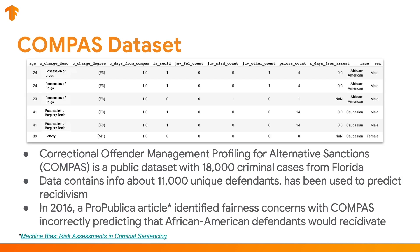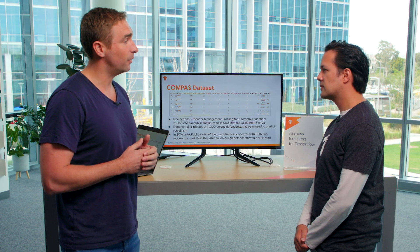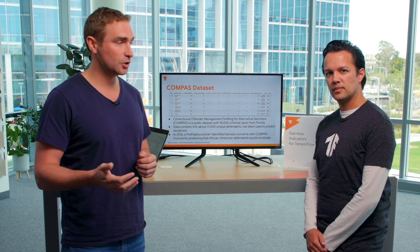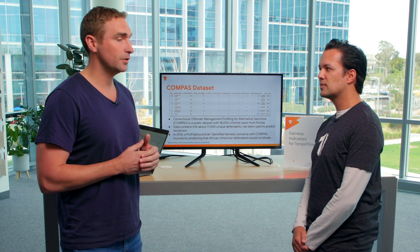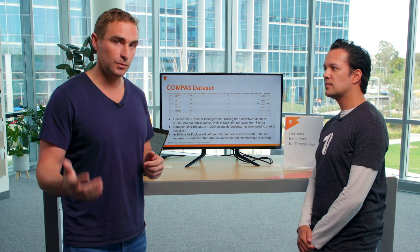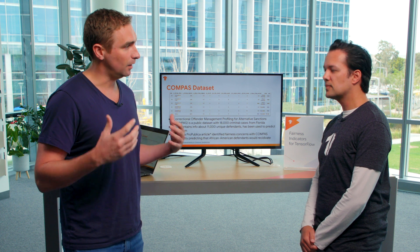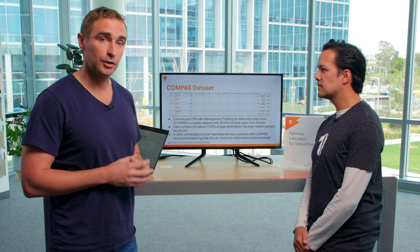The data we're using is known as the COMPAS dataset. This is two years of actual criminal record data from the Florida judicial system. It is important to note that using this data has a lot of fairness concerns in terms of predicting that anyone might commit another crime. I would encourage anybody that follows along to also take a look at the AI Partnership and their article on the use of this dataset to understand and predict a person's likelihood to commit another crime.